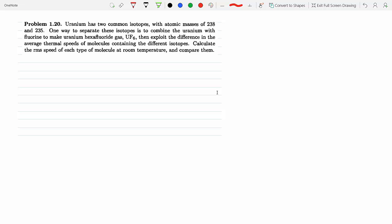It turns out to be significant between them in order to separate them from each other. So let's go ahead and see how we'll find the RMS speed of each type of molecule at room temperature, and then we will compare them.